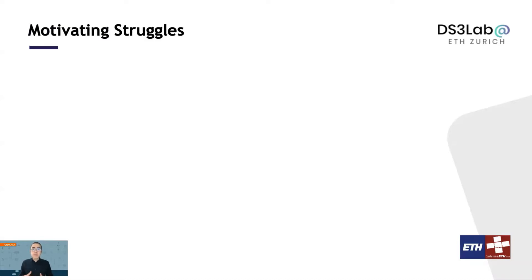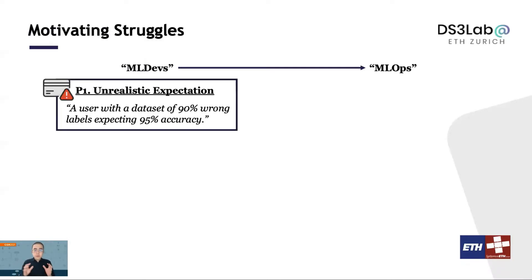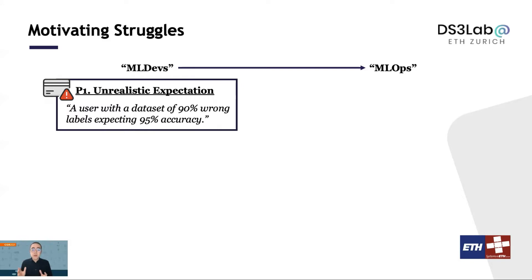And all these struggles happen in both the development phase and also the deployment and maintenance phase. The first struggle that we see is what we call unrealistic expectation. It happens when a user has a very high expectation on the quality of a machine learning model but does not really have the right data to support it. We see many users start very expensive AutoML runs on a dataset that's way too noisy to meet their quality expectation in the first place, and they often get very frustrated after spending all these resources but cannot reach their goal.